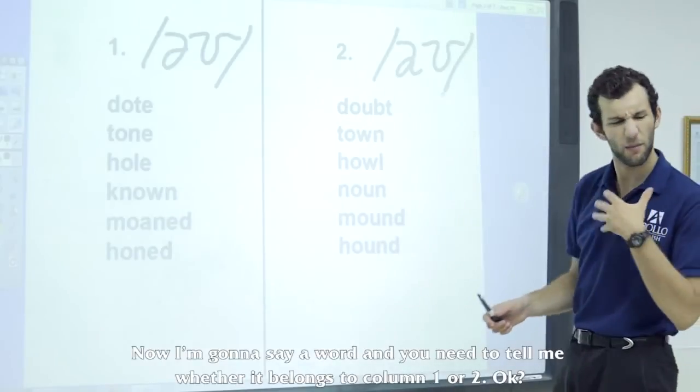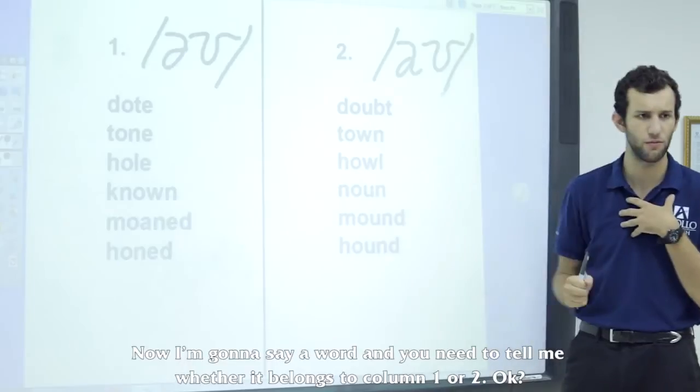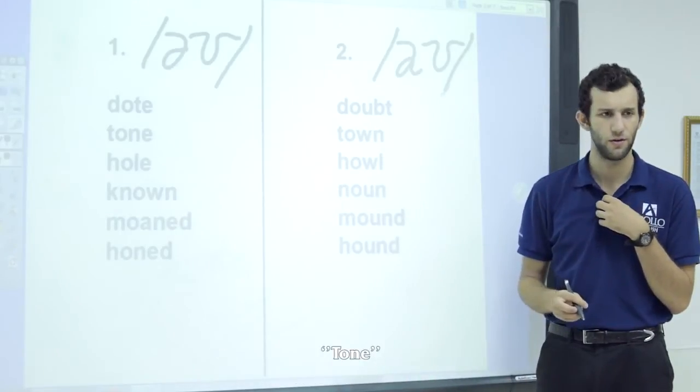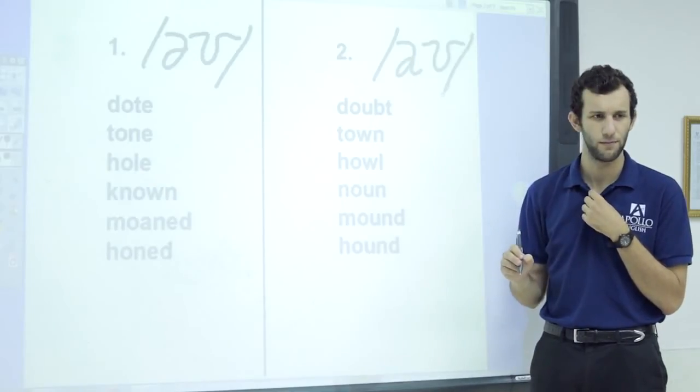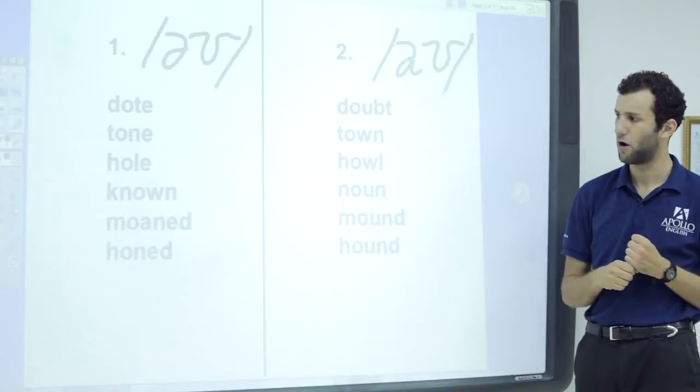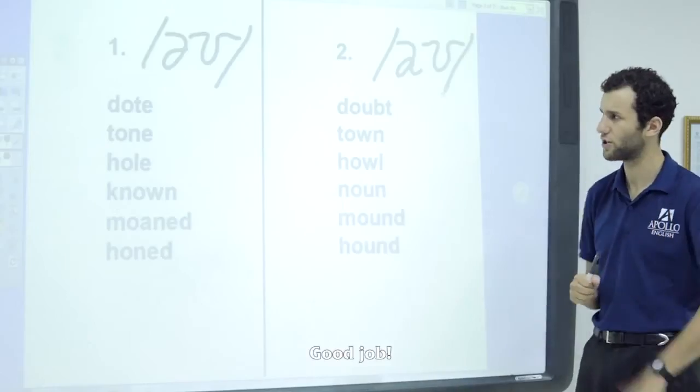Now, I'm going to say a word. You need to tell me if it's in column one or column two, okay? Tongue. Number one. Good. Tongue. One. Good. Mound. Two. One. Good job.